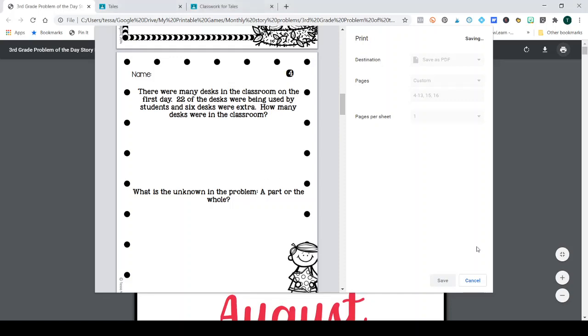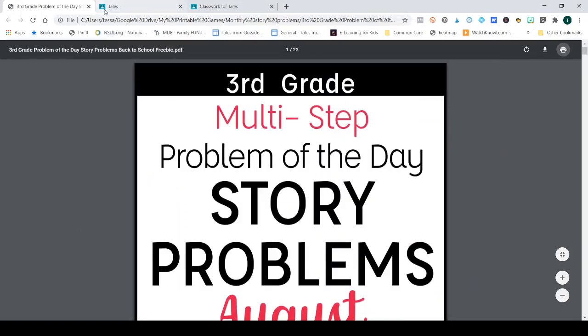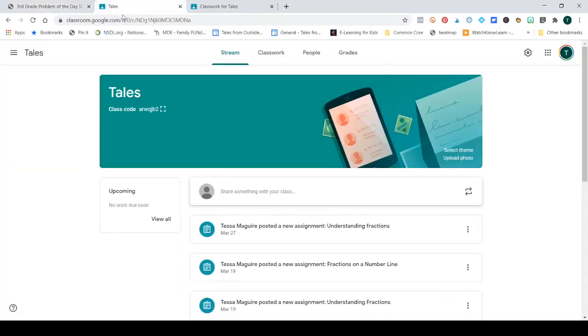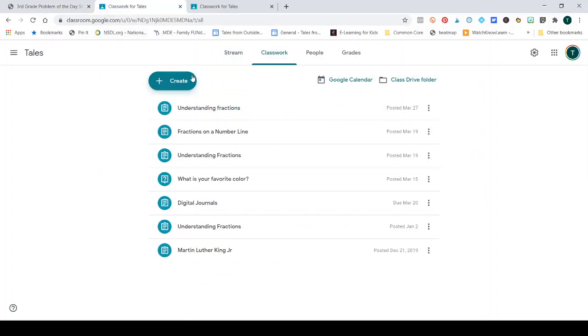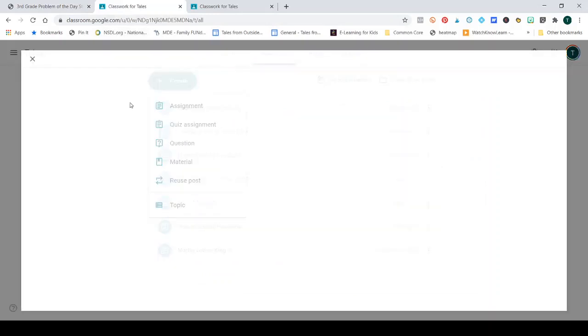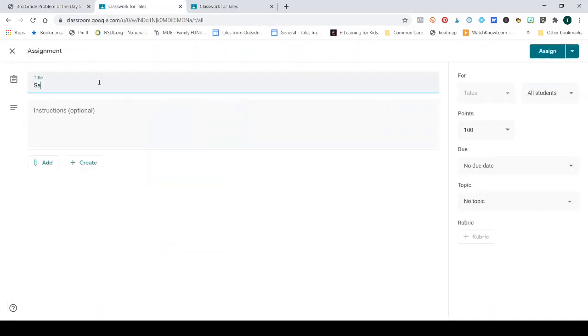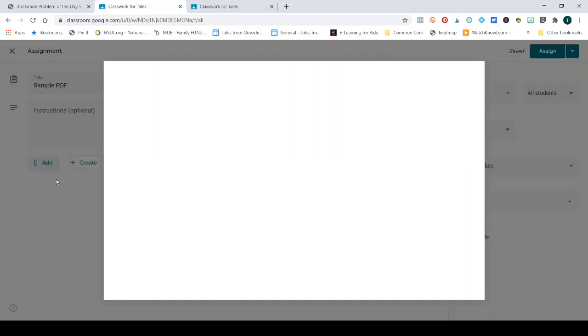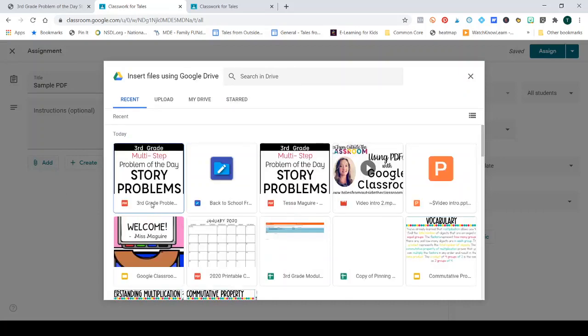I'm going to go ahead and click cancel because I don't need to change that. And I'm going to come over to my classroom. So I'm going to create a new classwork assignment. I'm going to title it sample PDF. And then I'm going to add that file I just edited the way I wanted it to.